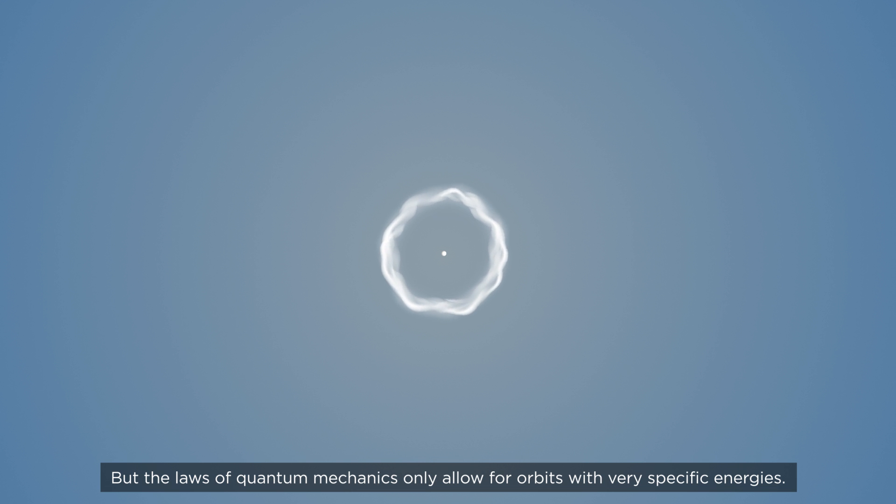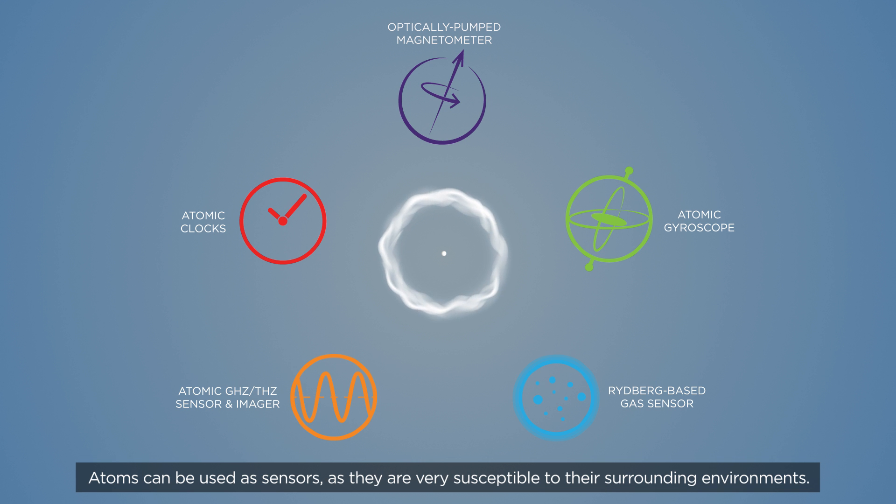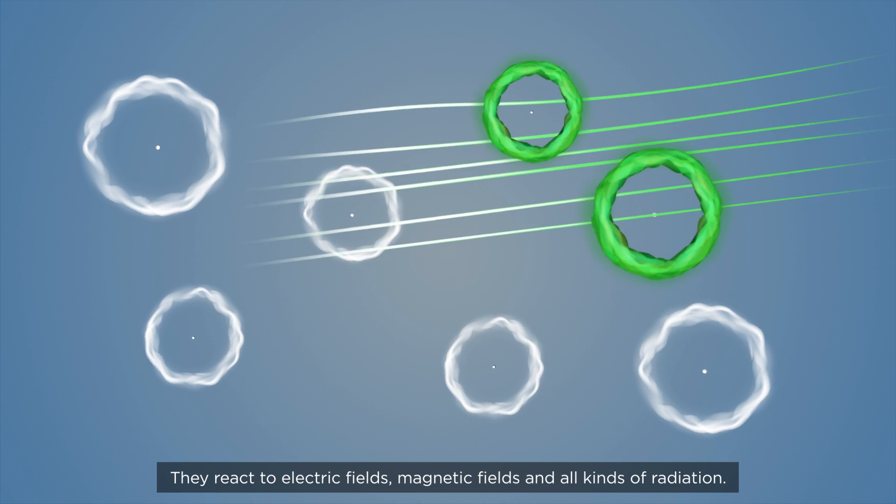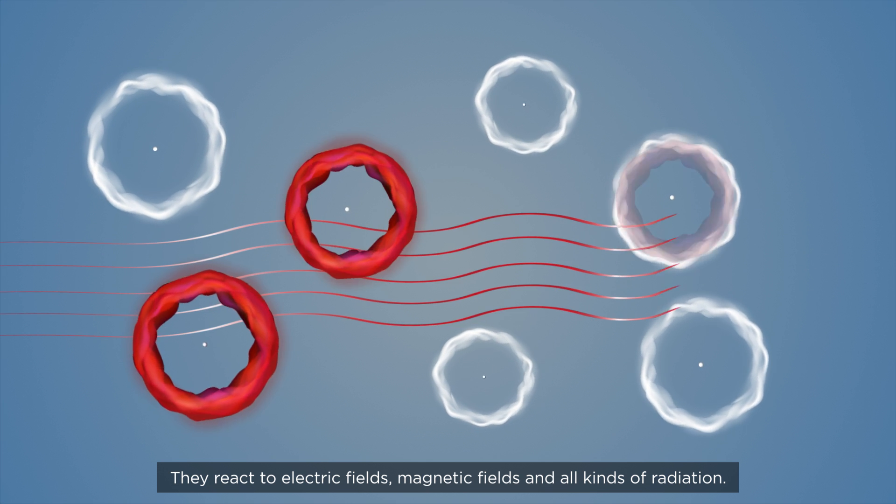But the laws of quantum mechanics only allow for orbits with very specific energies. Atoms can be used as sensors, as they are very susceptible to their surrounding environments. They react to electric fields, magnetic fields, and all kinds of radiation.